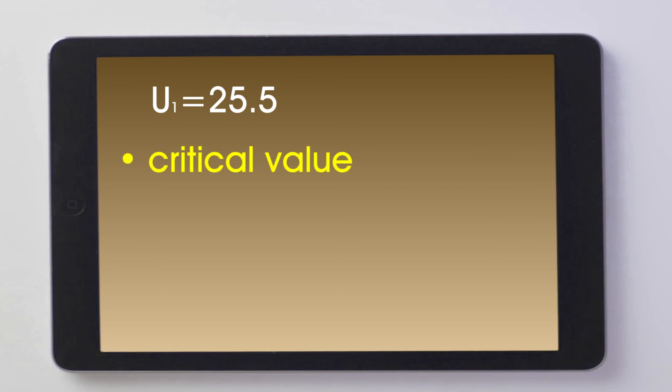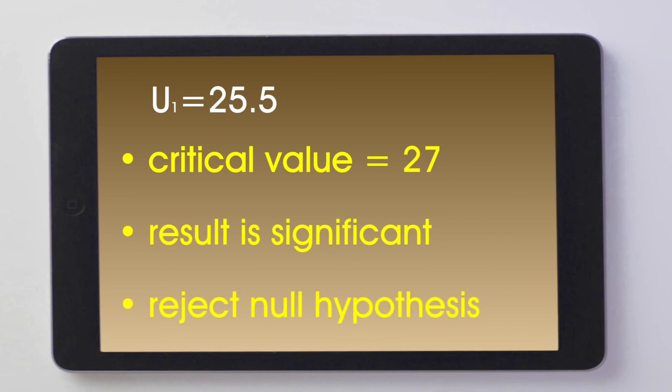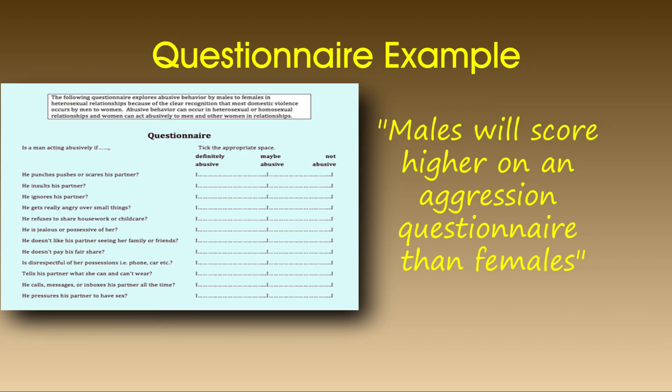The critical value for a one-tailed test at 5% with N equaling 10 is 27. Therefore, the result is significant and it is necessary to reject the null hypothesis. Evidence has been discovered to suggest that males did score higher on an aggression questionnaire than females.